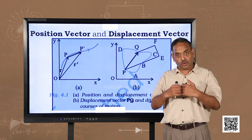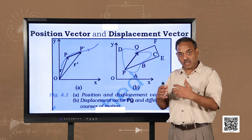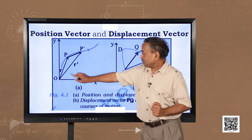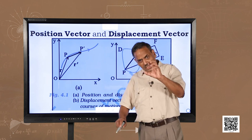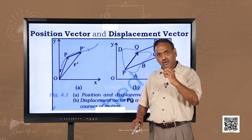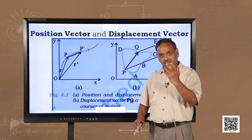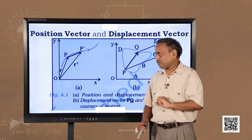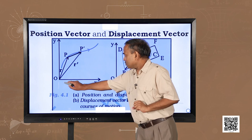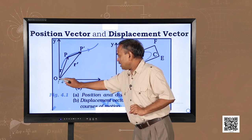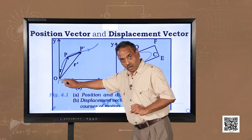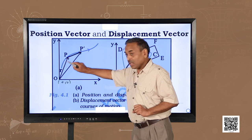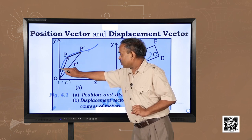Coming back to the same point on the same slide, I will elaborate on displacement vectors to understand it better. We always try to start motion from the origin (0,0) for convenience, so it becomes easier and requires fewer terms, less mathematics, and fewer expressions. At point O, the origin, an object starts and moves in a particular direction.